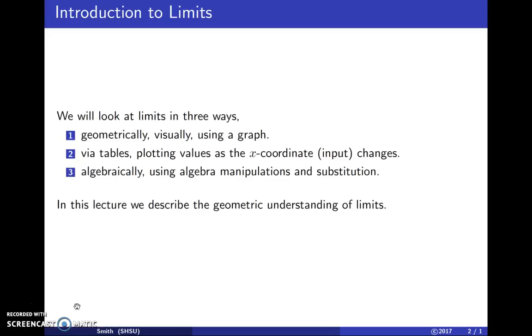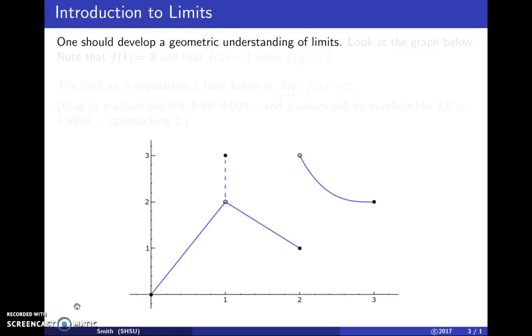So let's look at the geometric understanding of limits. Here's a picture of a particular function. And if we look at the black dots, we notice that since there's a black dot at the coordinate (1,3), this means that when you plug one into the function, you get out three. If you plug two into the function, you get out one. That's the explanation of the black dot at the coordinate (2,1).